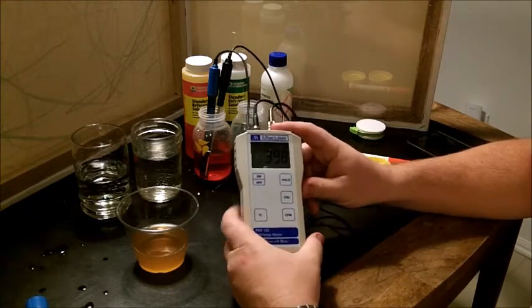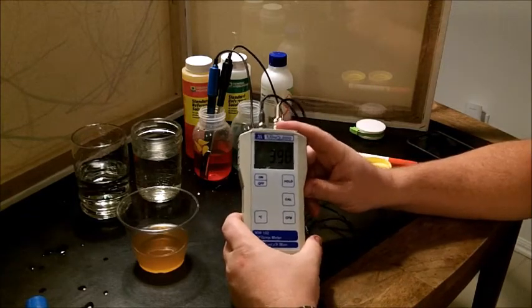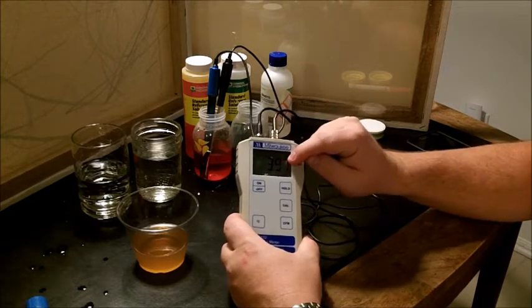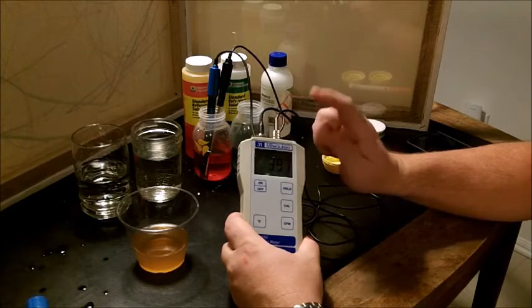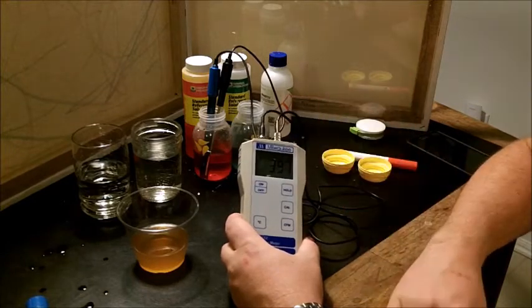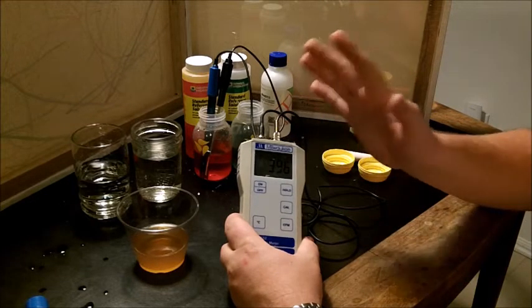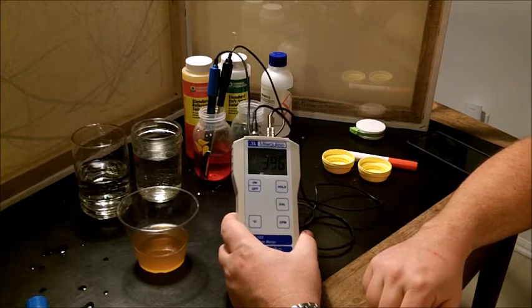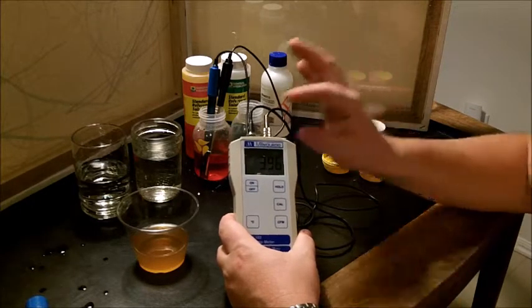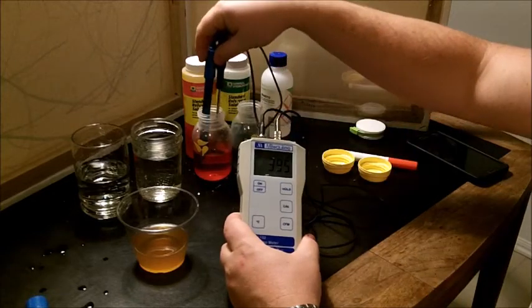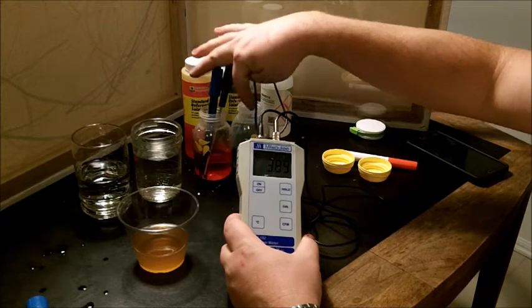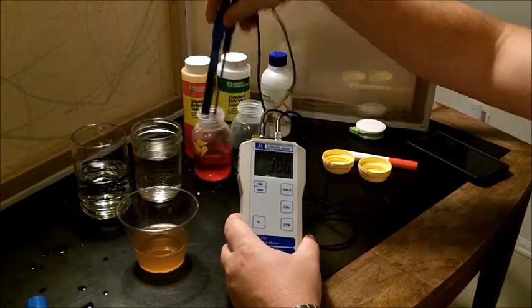That's because this is a hundred dollar pH meter. It's still within really close as far as brewing is concerned—we're still in the ballpark, 3.96. We're super close.